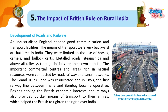Development of Roads and Railways: An industrialised England needed good communication and transport facilities. The means of transport were very backward in India at that time, limited to the use of horses, camels and bullock carts. Metal roads, steamships, and above all railways, though initially for their own benefit, connected the important commercial centres and areas rich in natural resources by road, railway and canal networks.